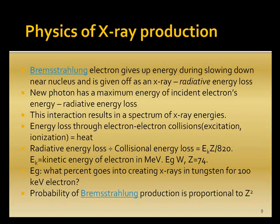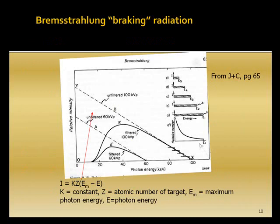Bremsstrahlung production is proportional to Z squared — as atomic number goes up, there's more Bremsstrahlung. Here's a graph of the X-ray energy spectrum. The y-axis is relative intensity (number of photons) and the x-axis is photon energy. There are two curves: 60 kVp and 100 kVp, each with filtered and unfiltered versions.